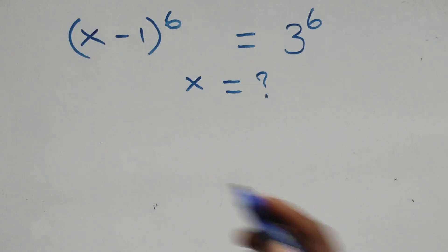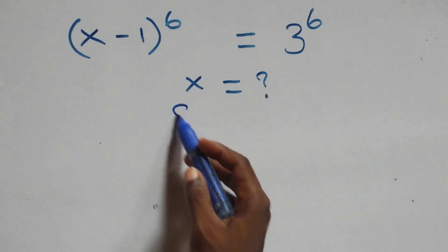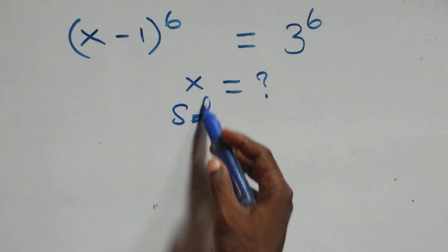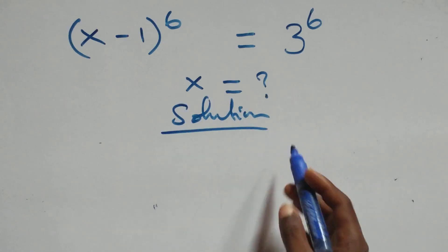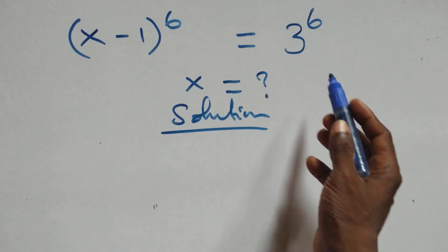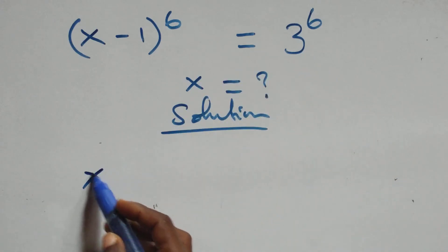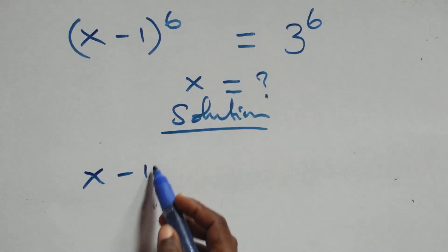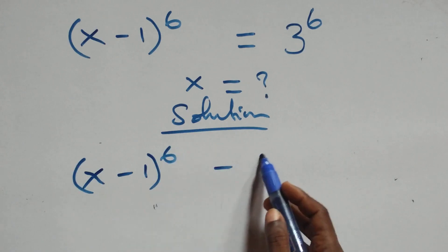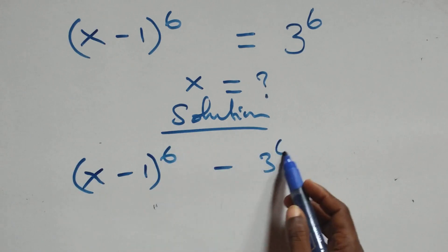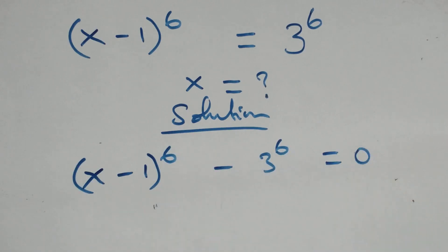Hello, you are welcome. Here we solve a nice exponential equation. What we have is 3 raised to the power 6 on the left-hand side, and we have x minus 1 all raised to the power 6 minus 3 raised to the power 6 equals 0.